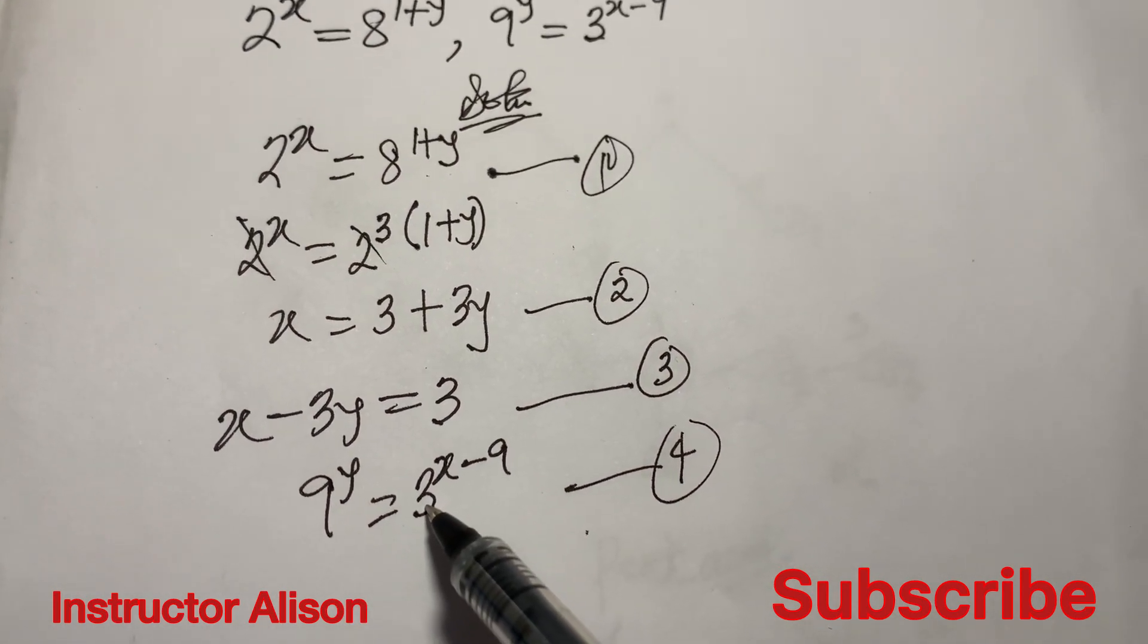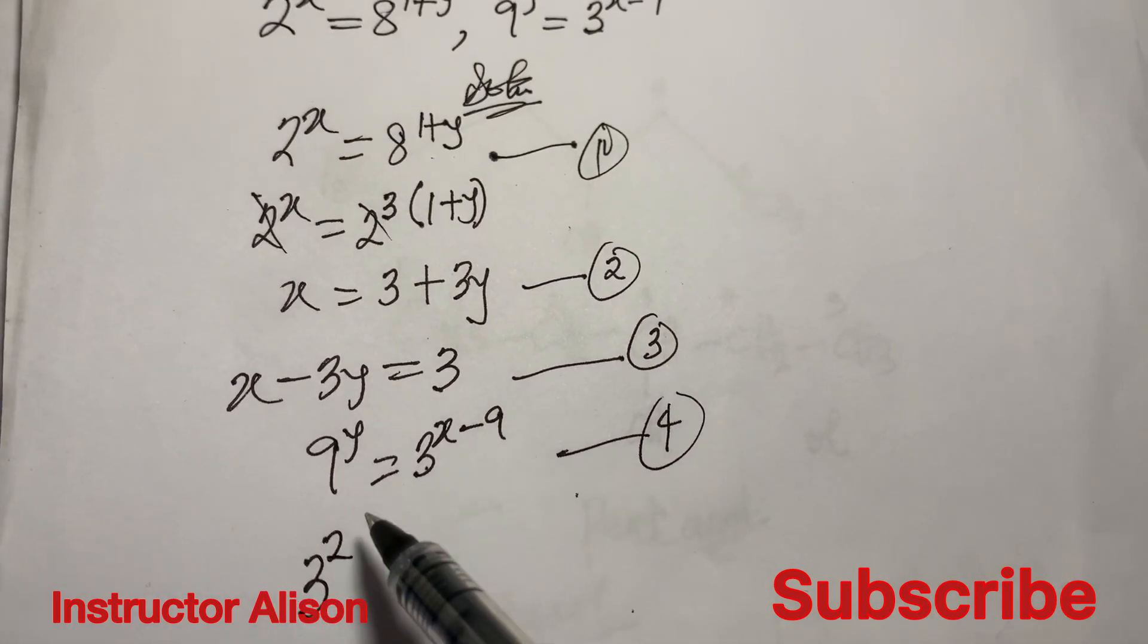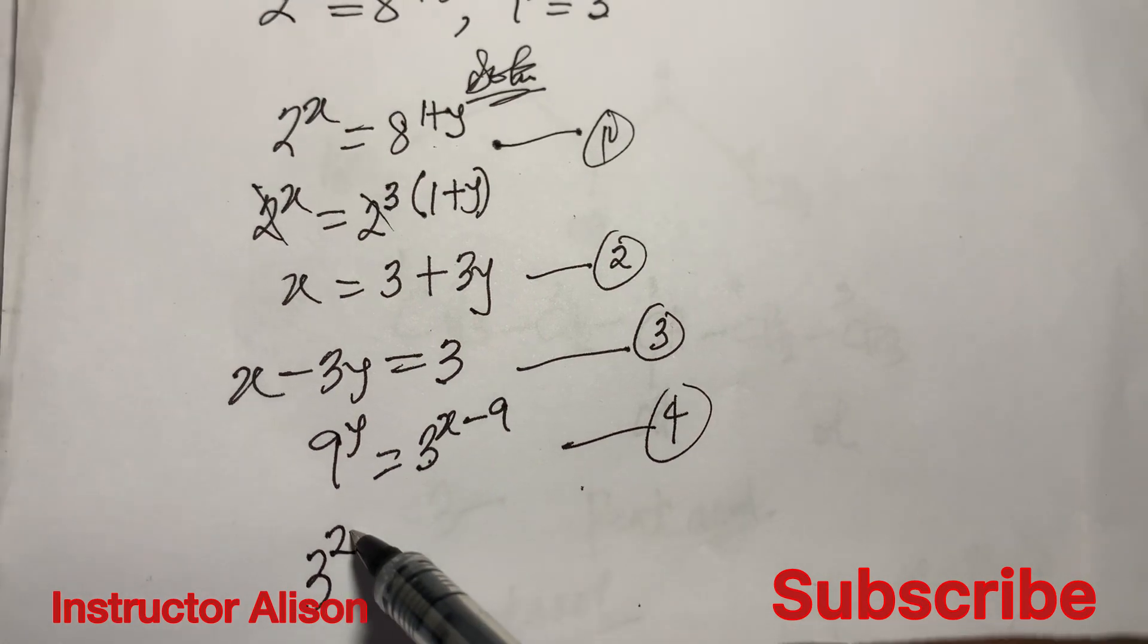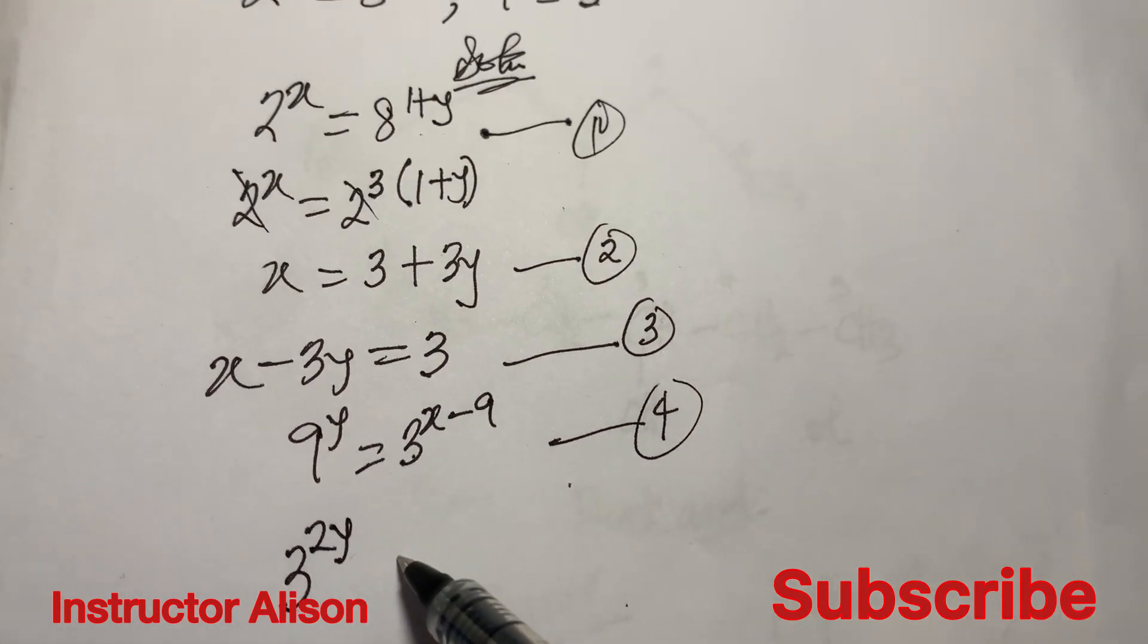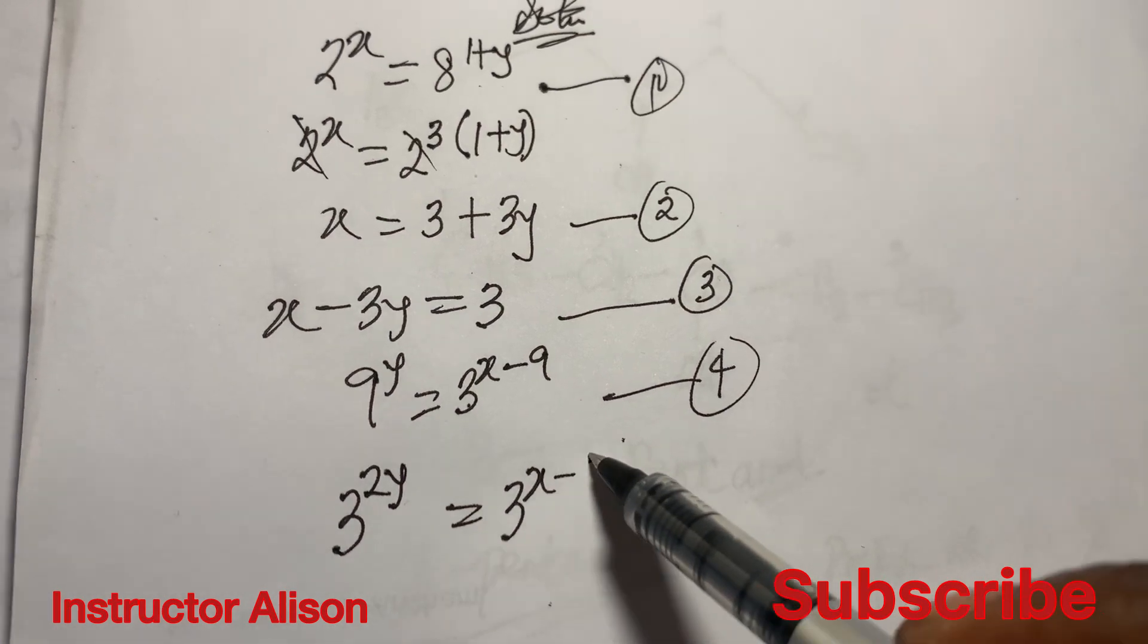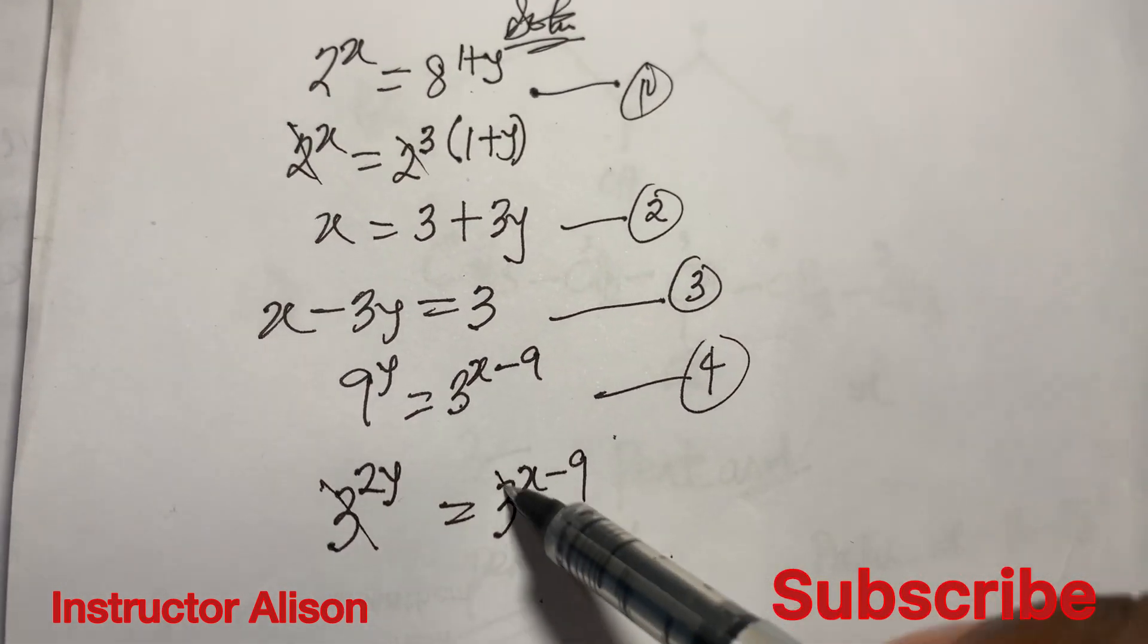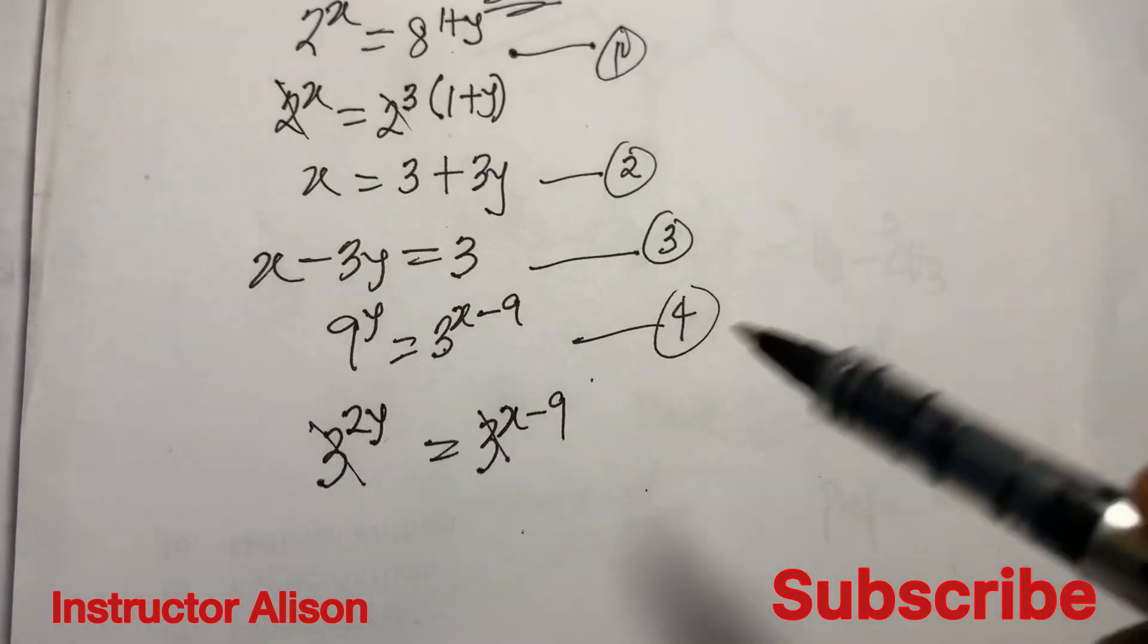Let's leave it here because we cannot solve for two unknowns. Let's work with the second one. The second one we have is 9^y = 3^(x-9). What are we supposed to do? We need to reduce this 9 in a way that you have the same base.